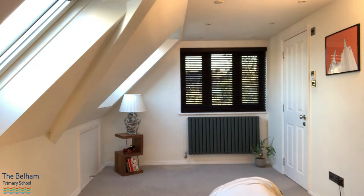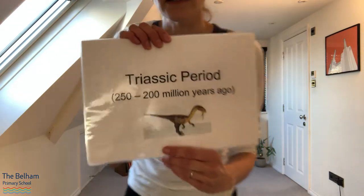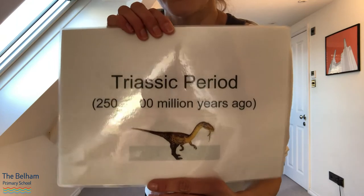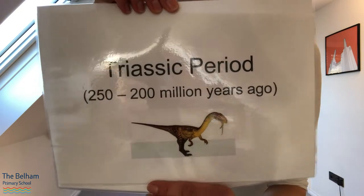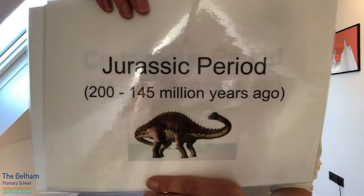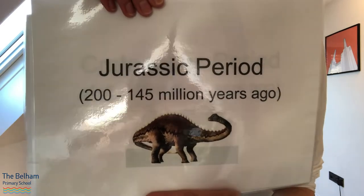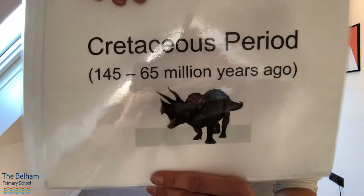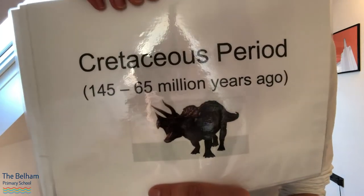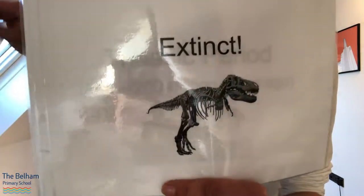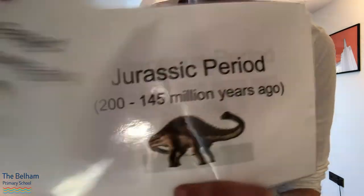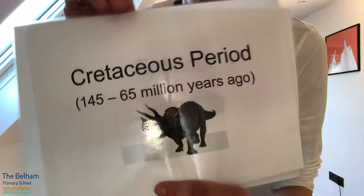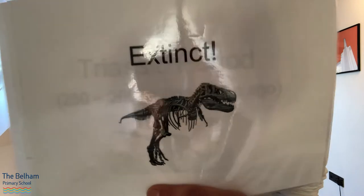What we're going to do next is look at the three areas that were around during the time of the dinosaurs. We looked at these last time — the Triassic period, which is about 200 million years ago; the Jurassic period, which is about 150 million years ago; and the Cretaceous period, which was about 100 million years ago. And then we looked at extinct, where all the dinosaurs became extinct. Do you remember — Triassic, Jurassic, Cretaceous, and extinct? That means no longer — they don't exist anymore.